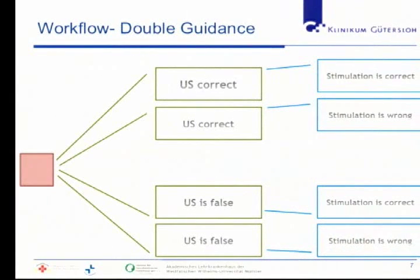What can happen personally is a really big problem. We can have a correct ultrasound picture where stimulation is the exact endpoint — that is ideal. But we can also have a correct ultrasound picture where stimulation is wrong — it can be false positive or false negative. Additionally, the ultrasound picture can be false or needle placement wrong while stimulation is correct. Worst case: both ultrasound and stimulation are wrong.